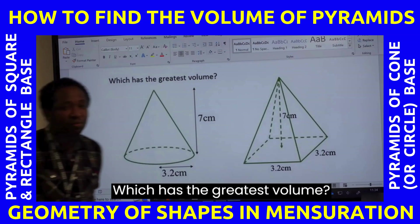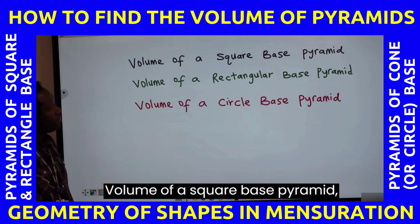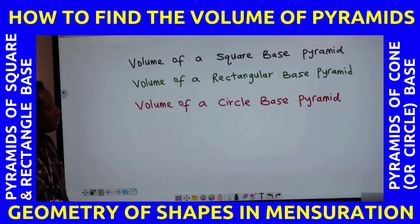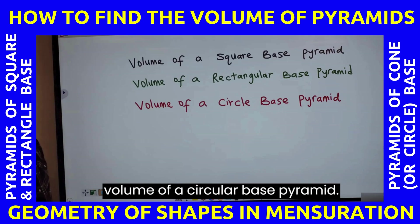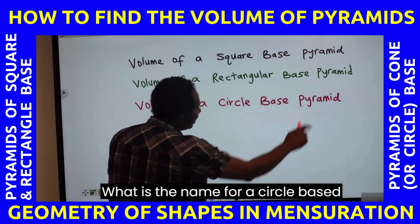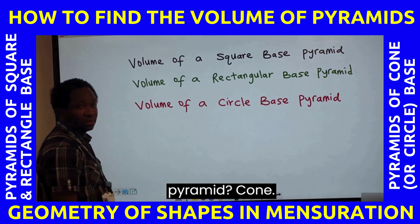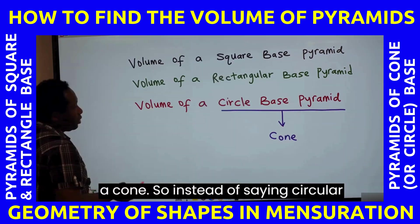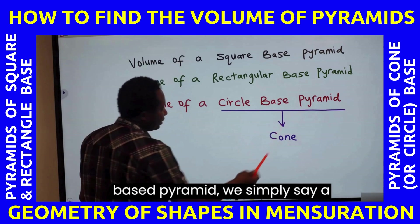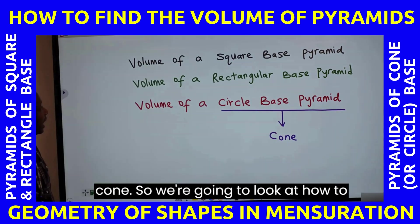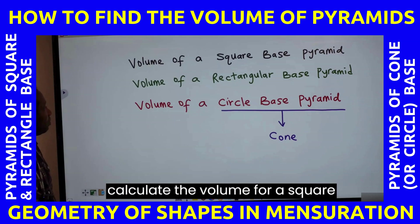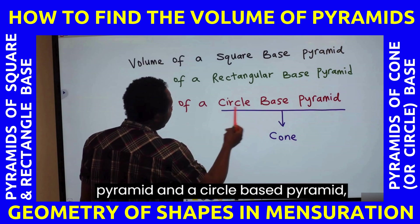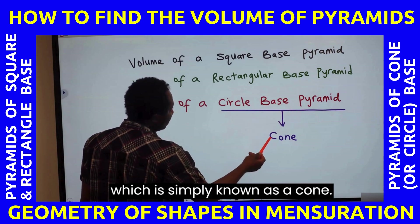Which has the greatest volume? Volume of a square-based pyramid, volume of a rectangular-based pyramid, and volume of a circular-based pyramid. What is the name for a circle-based pyramid? A cone. So instead of saying circular-based pyramid, we simply say a cone. We're going to look at how to calculate the volume for a square-based pyramid, a rectangular-based pyramid, and a circle-based pyramid, which is simply known as a cone.